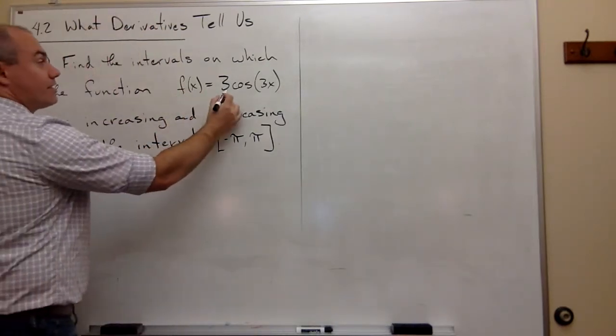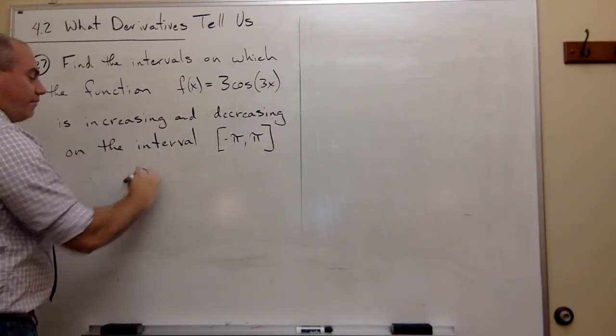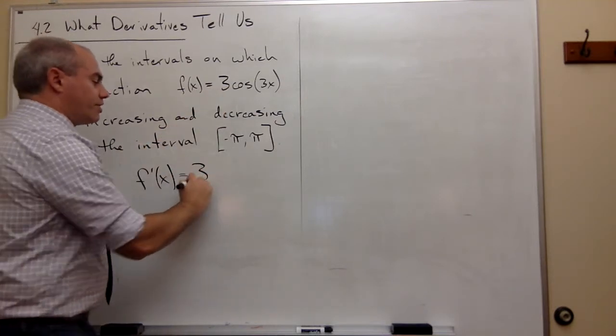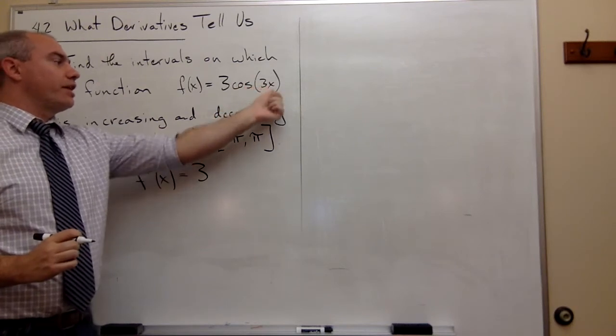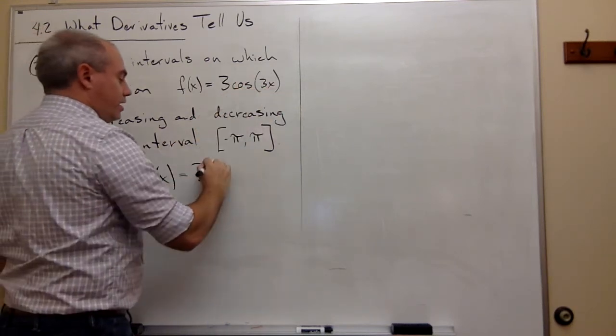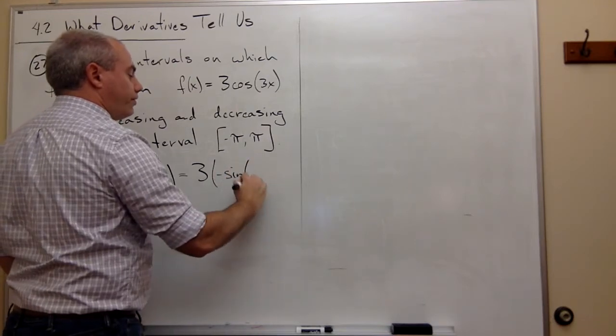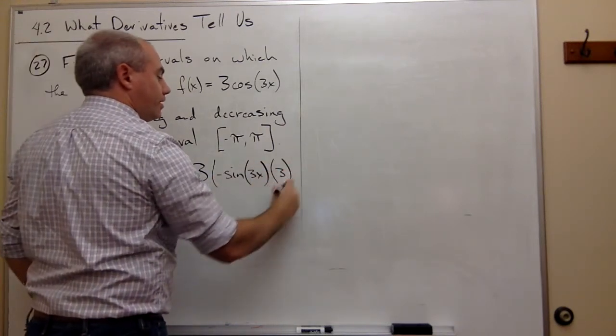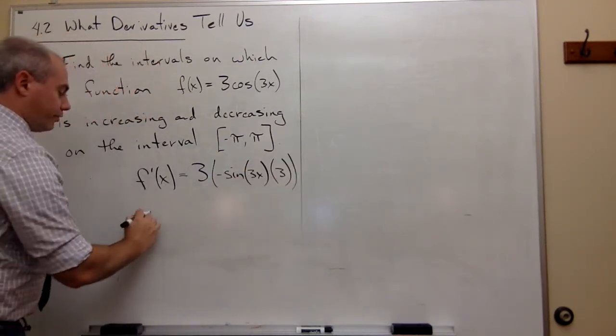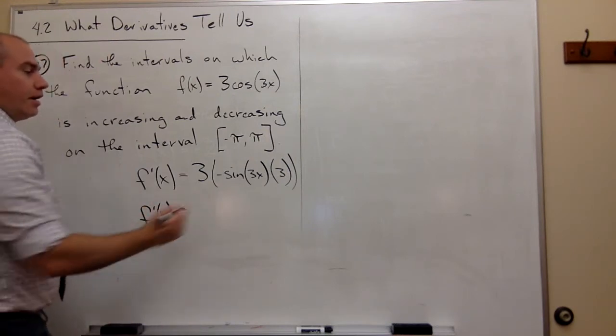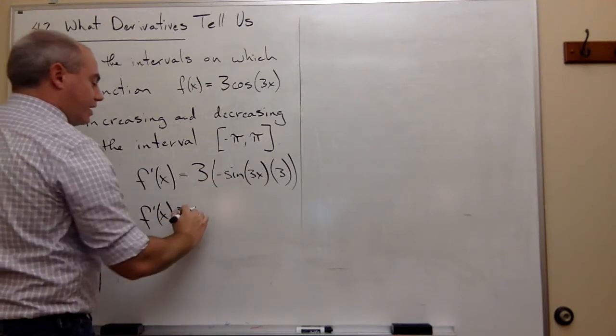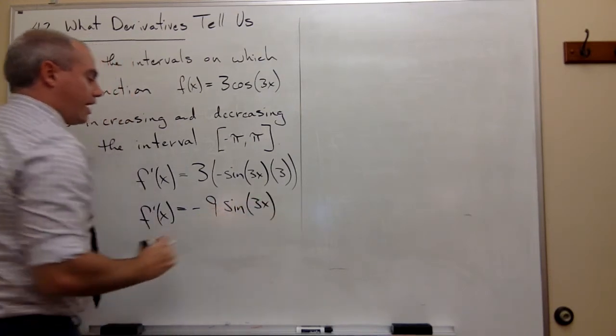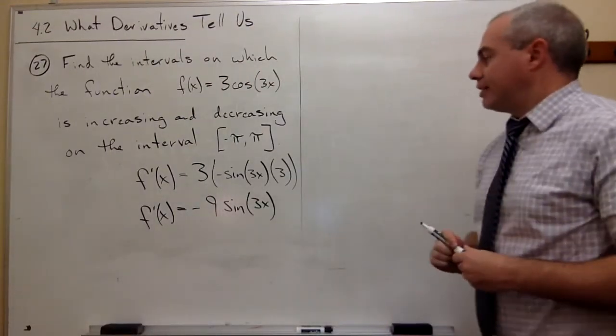I'll take the derivative of f of x equals 3 cosine of 3x. So I get f prime of x is equal to, well 3 is a constant so it just stays around, and then I need to take the derivative of cosine of 3x. The derivative of cosine is negative sine of 3x times the derivative of 3x by the chain rule. So I have to multiply by an additional 3. I could write that f prime of x equals 3 times 3 is 9, and I have a negative, so this is negative 9 sine of 3x.